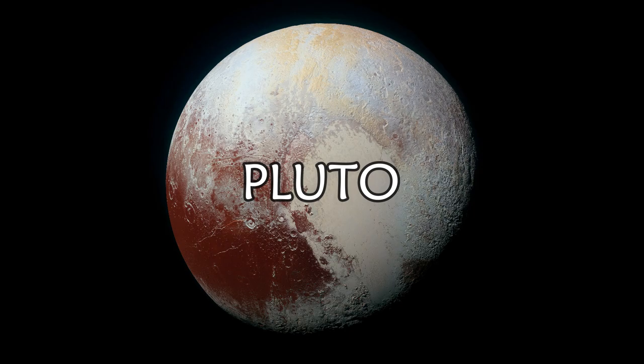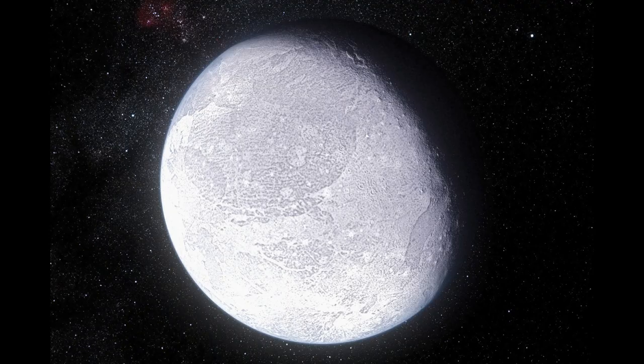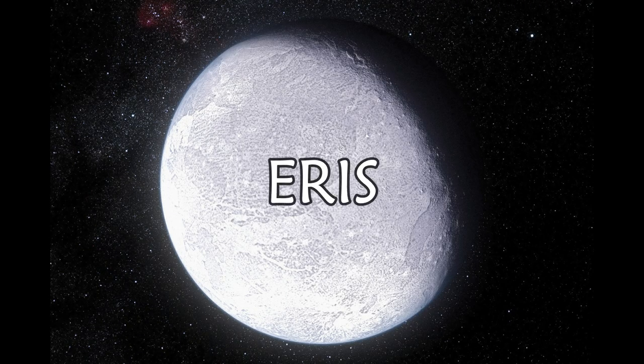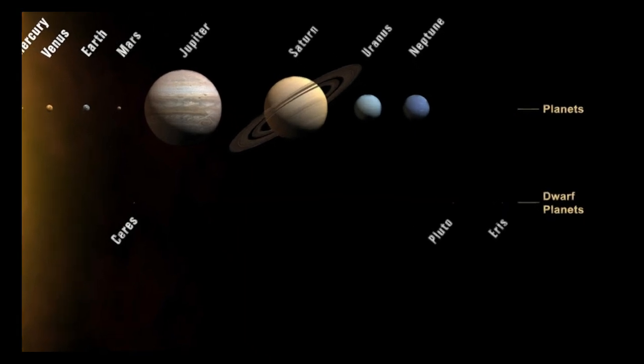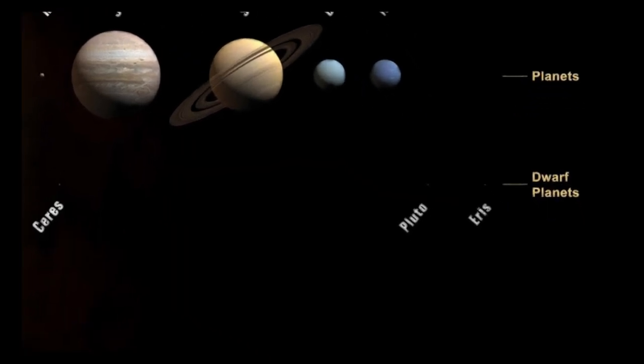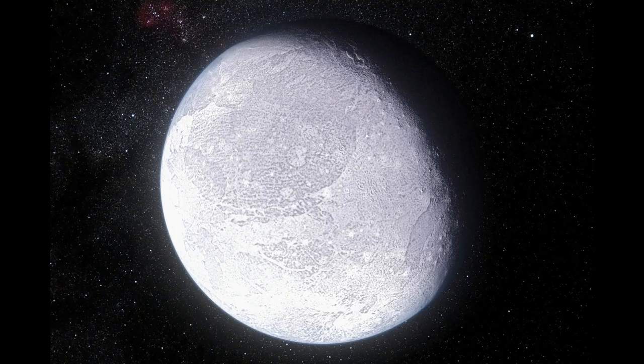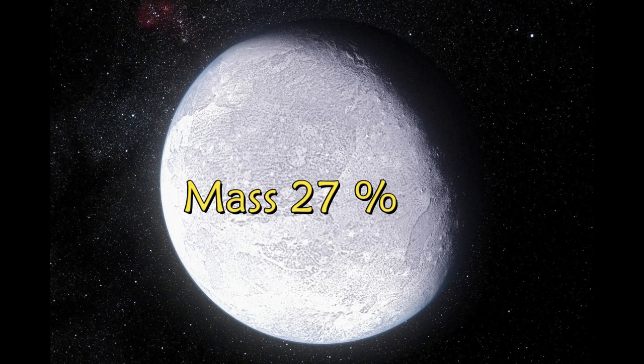Pluto has a planet nearby. In 2005, Eris was discovered as a planet. This planet has a lot in common with Pluto — its mass is about 25% of Pluto's mass.